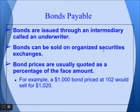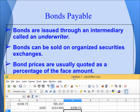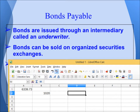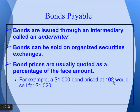Bonds can be sold on organized security exchanges, where bond prices are usually quoted as a percentage of the face amount. For example, a bond with a face value of $100,000 quoted at 102 means it is selling at 102% of face value. A bond quoted at 102 would sell for $1,020 if the face value is $1,000.